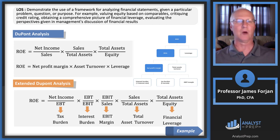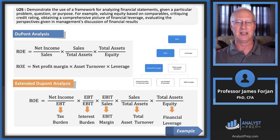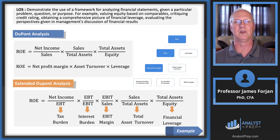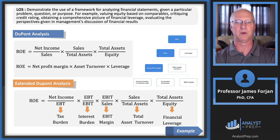I tell my students that DuPont allows us to identify those strengths and weaknesses of a company's operations — much like a SWOT analysis of strengths, weaknesses, opportunities, and threats. The next step is to answer: is it possible that a company is propping up return on equity by using substantially depreciating assets, or is it trying to hide some poor performance? This leads to the extended DuPont analysis, where we now have five components.